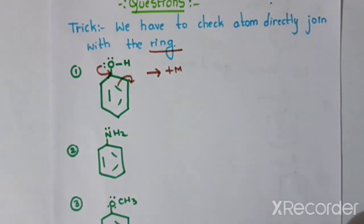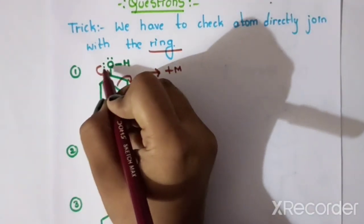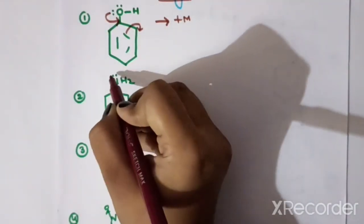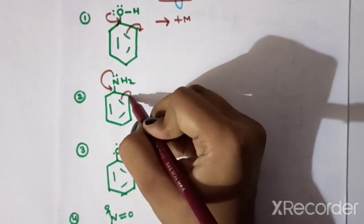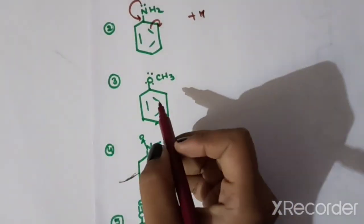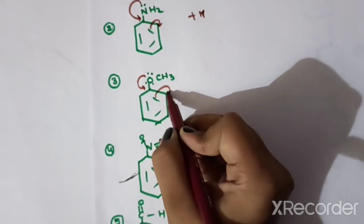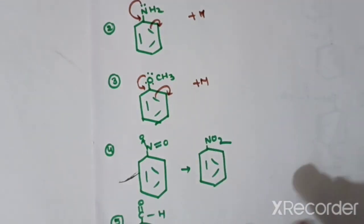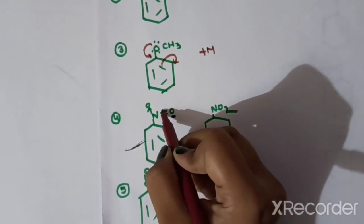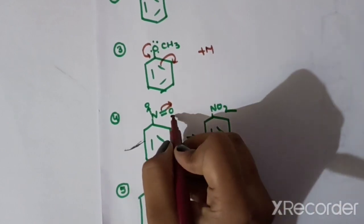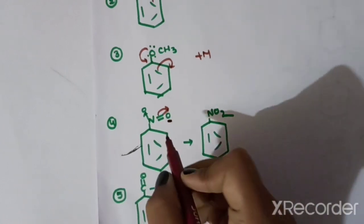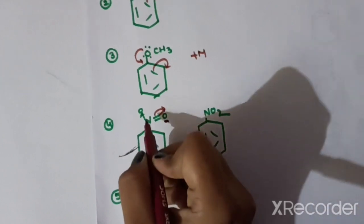The electrons are donated to the plus M group. Here we have a lone pair of electrons — lone pair of electrons donated to the conjugated system, so this is the plus M group. Similarly, here we have a lone pair of electrons — this is the conjugated system, so this is the plus M group. We have more electrons on nitrogen, so this is the plus M group.